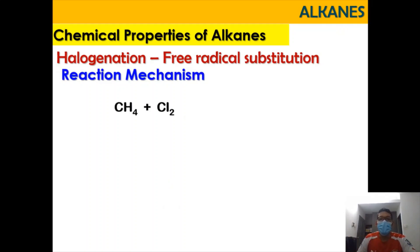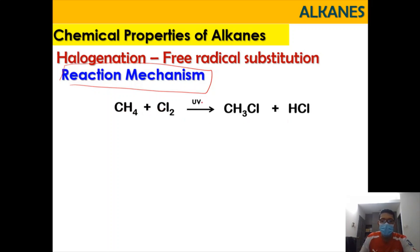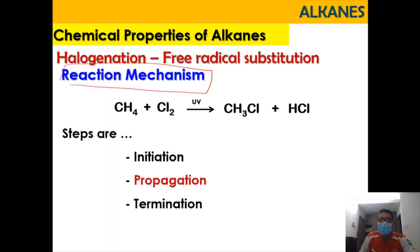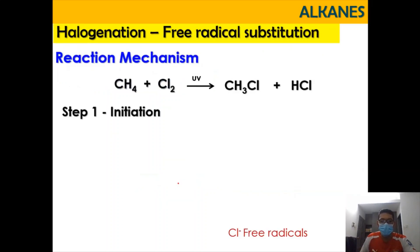Now we're going to look into the free radical substitution mechanism. A mechanism is a reaction that happens step by step, and we have to follow the sequence. For methane reacting with chlorine to give CH₃Cl and HCl under UV, the steps of the mechanism are: the initiation step, the propagation step, and the termination step. The most important is the propagation step, because this is where the major product is formed.